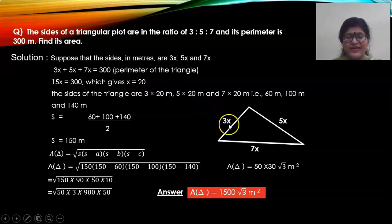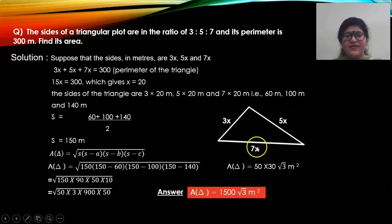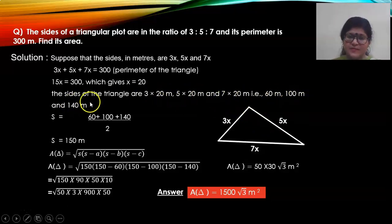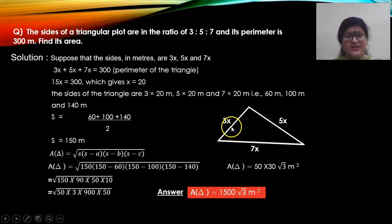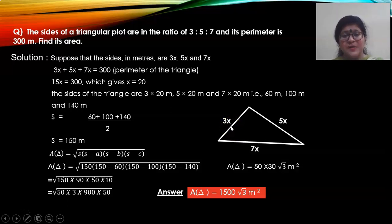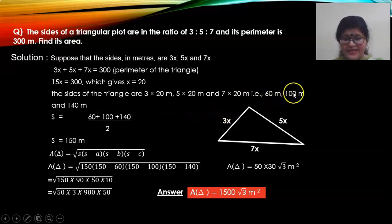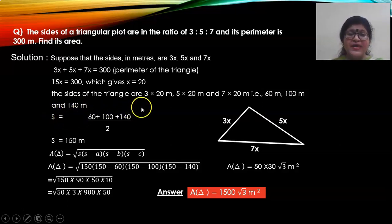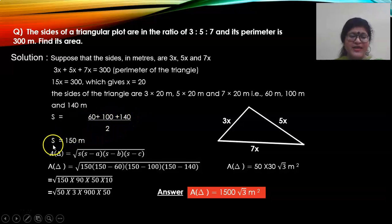With x equal to 20, the sides become 3 into 20, 5 into 20, and 7 into 20 — that is 60, 100, and 140 meters. Now find the semi-perimeter. Semi-perimeter is A plus B plus C upon 2. You can write it directly as perimeter upon 2, that is 300 divided by 2, giving S equal to 150 meters.